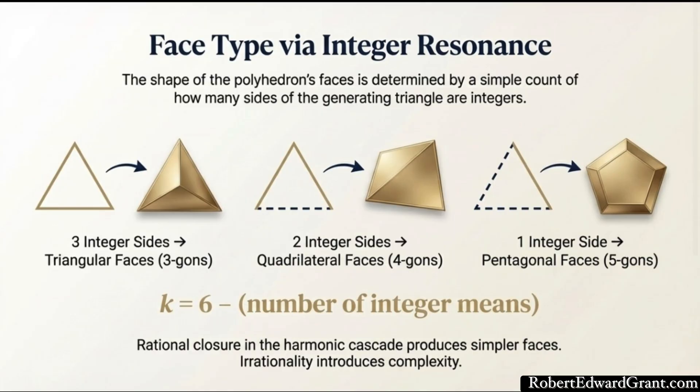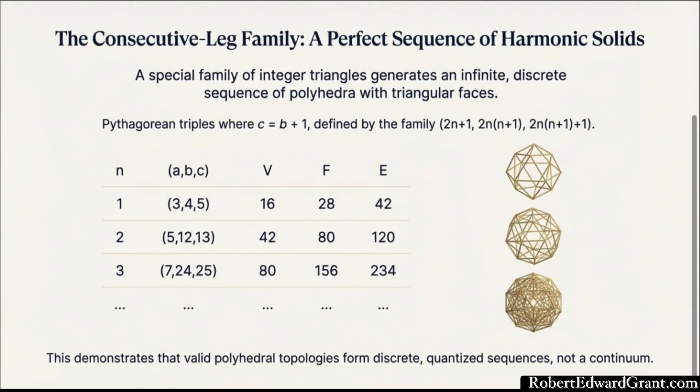Let's take the classic example, the 3, 4, 5 triangle. All three sides are integers, so K equals 6 minus 3, which is 3. It has to have triangular faces. What if only two sides are integers? Then K equals 6 minus 2, which is 4. That forces the shape to have quadrilateral faces, squares. And if we use a more complex generator, maybe one involving the golden ratio where only one side is an integer, then K equals 6 minus 1, which gives you 5, pentagonal faces. The whole external architecture is determined by the numerical resonance of the generating key.